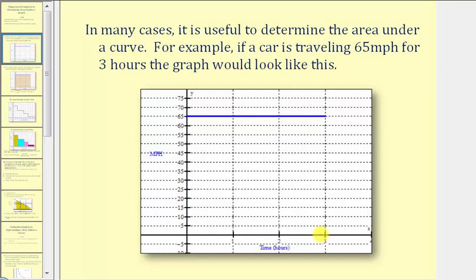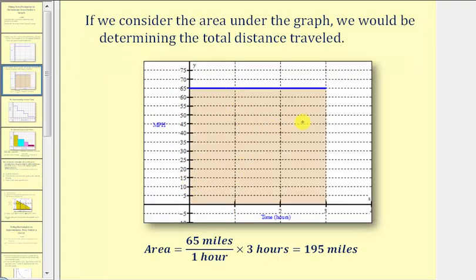When talking about the area under a curve or under a graph, we're referring to the area under the graph and above the x-axis, so the area under this graph would be the shaded region here. Notice how the shaded region is a rectangle, so we can find the area under this curve by using the area formula for a rectangle, which is area equals length times width. To understand the meaning of this area, we'll leave the units on. The length would be 65 miles per hour, and the width would be three hours. Notice how the units of hours would simplify out, giving us a product of 195 miles. So this area represents the total distance traveled over three hours when traveling 65 miles per hour.